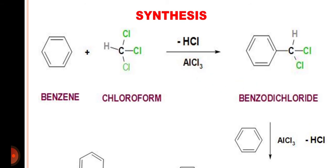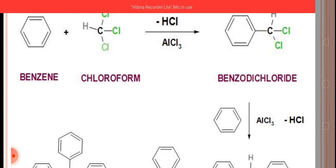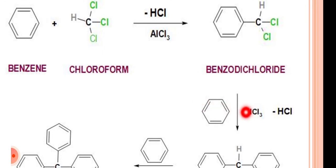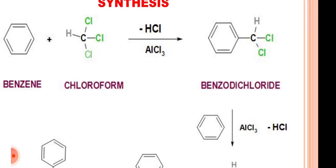This gives the formation of benzodichloride. This benzodichloride is then reacted with a second molecule of benzene again in the presence of aluminium chloride. Once again, the electrophilic aromatic substitution reaction takes place with the liberation of HCl.